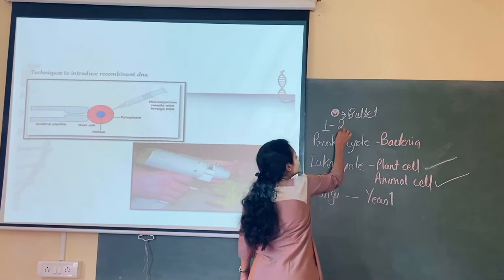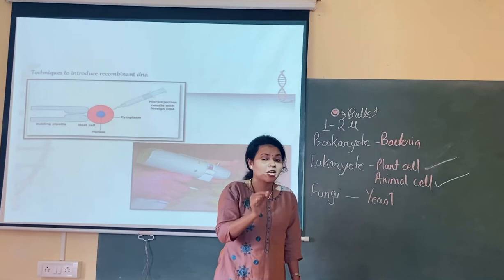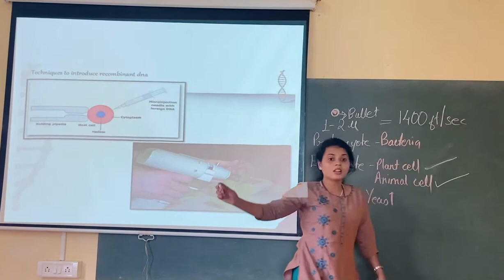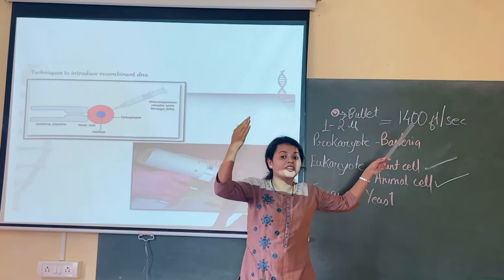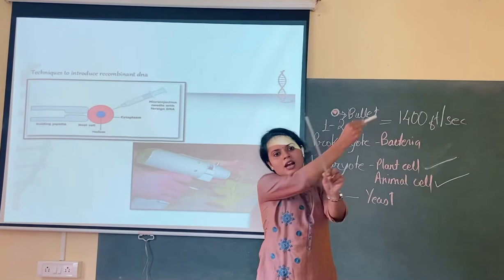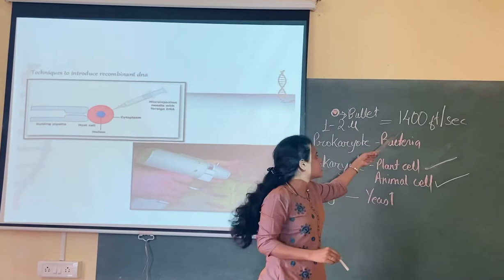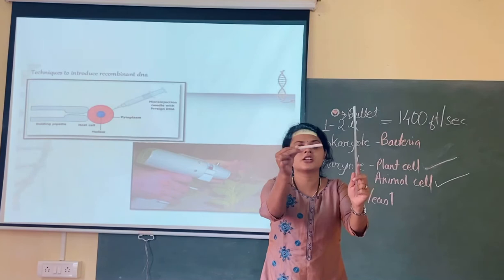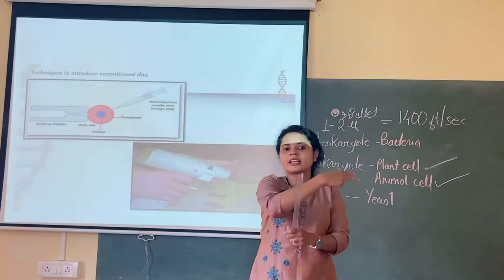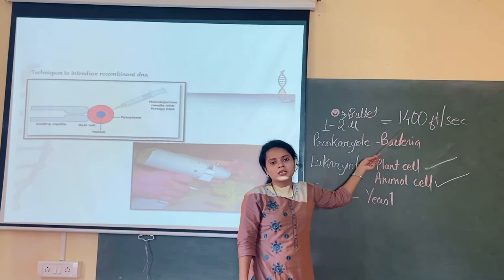Some extra points about this bullet: the size of the gold or tungsten particle coated with the gene of interest is almost 1 to 2 microns — very small. The speed at which it is bombarded is almost 1400 feet per second. If the speed is very high — like 1500 or 1600 feet per second — there is a chance the gene of interest will just pass through the cell and not go into the nucleus. If the speed is too low — around 1000 to 1200 feet per second — the bullet will just hit the cell membrane and come back. So the optimal speed for bombarding is 1400 feet per second.